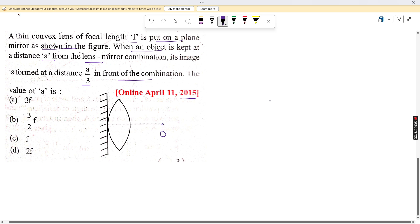So the object is kept at distance a from the lens, and the image is formed here at a/3.